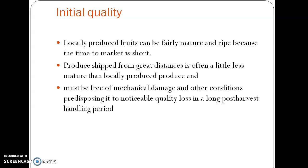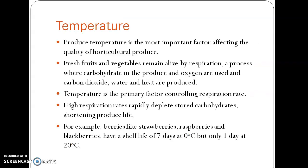Regarding initial quality of the produce: when harvesting for the local market, produce should be picked fairly mature and ripe, but when harvesting for great distances, it should be slightly less mature than locally sold fruits or vegetables. During transportation, the produce should be free from any mechanical damage or quality loss in the post-harvest handling period, so that it can withstand transportation.